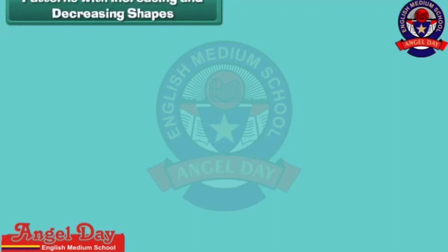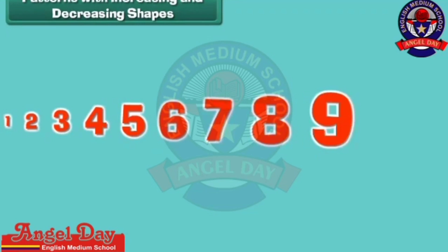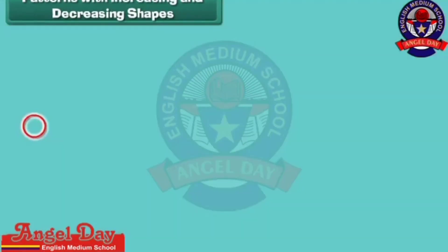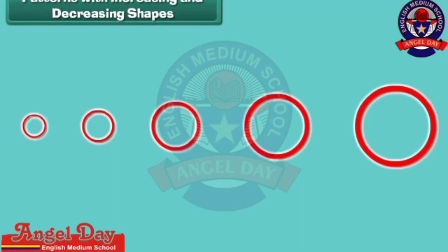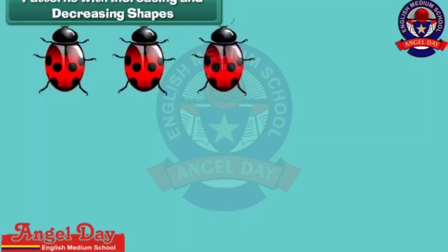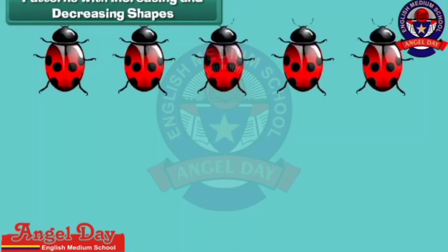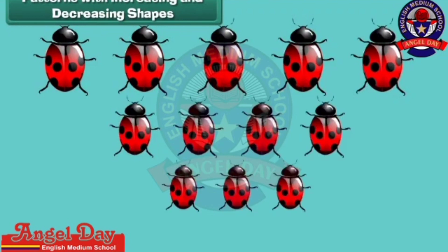Patterns with increasing and decreasing shapes. We can form patterns by increasing or decreasing the number or size of shapes. Look at this arrangement: one circle, followed by two circles, followed by three circles, and so on. This is a pattern because the circles increase in a definite order. This is also a pattern because the number and size of the beetles decreases in a definite order.